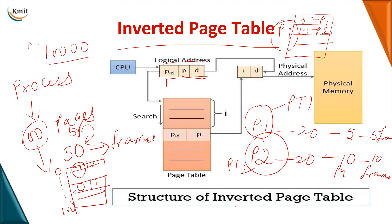In the inverted page table, the logical address has three fields: process ID, page number, and displacement — unlike the two fields (page number and offset) used before. The process ID and page number are compared against entries in the table; when both match at index i, that index becomes the frame number. The frame number combined with displacement gives the physical address.